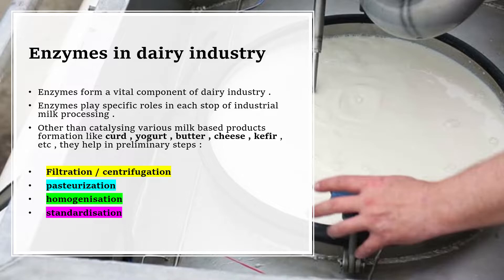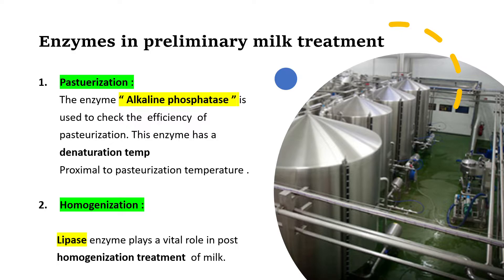Other than helping in production of milk products, enzymes also help in preliminary steps — the steps which milk undergoes before processing. These include centrifugation, homogenization, which helps fat particles distribute evenly, and standardization, which brings individual components to particular values. Two important preliminary steps in which enzymes play a role are pasteurization and homogenization.